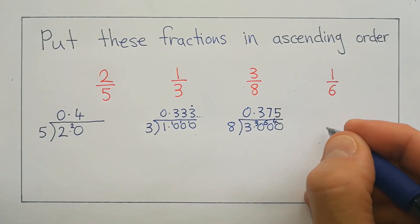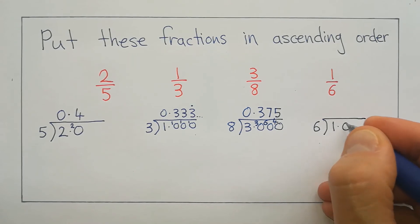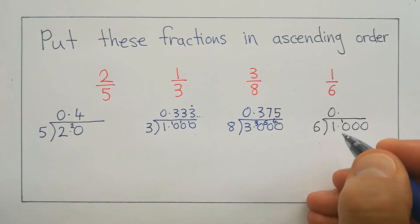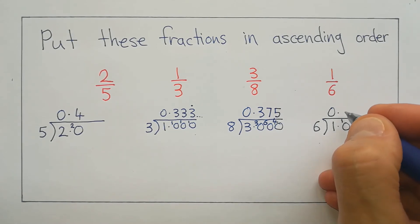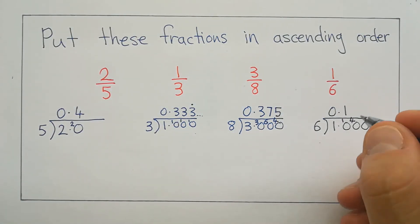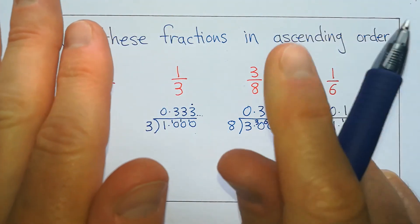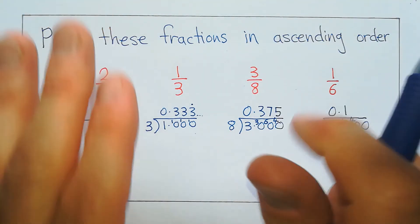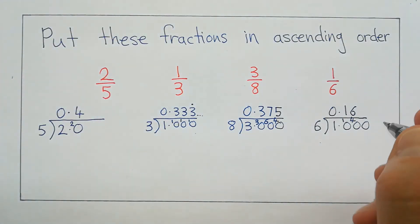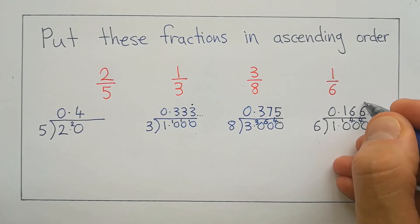And finally we've got 1 sixth. So bus stop — 1 on the inside, 6 on the outside. Put a few zeros in. Does 6 go into 1? No. Carry the 1. How many times does 6 go into 10? It goes in once, and then 7, 8, 9, 10 — so that's 4 left over. How many times does 6 go into 40? 6, 12, 18, 24, 30, 36 — 42 would be too many. So we stop at 6 sixes, which was 36, and then we've got 37, 38, 39, 40 — 4 left over. So it's 40 again, meaning 6 into 40 is going to be the same 6 recurring.